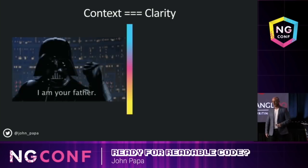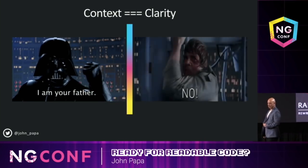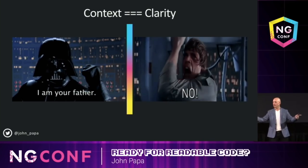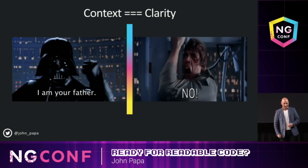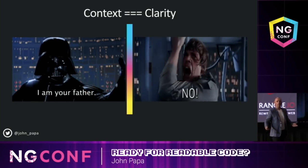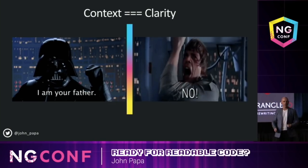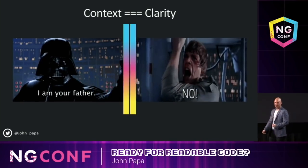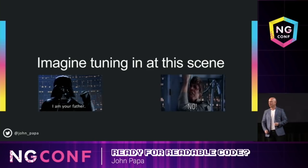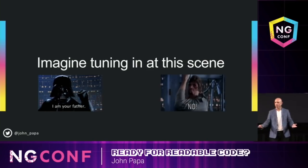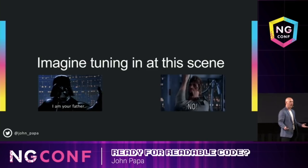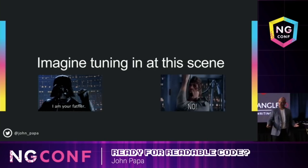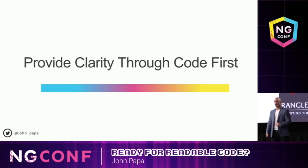Context is clarity. For example, if you saw this movie, you know this was a key moment — the moment where he reveals that he is Luke's father. Spoiler! Now imagine the first time you saw this movie and you tuned in at this scene — you'd be like, who cares? There's some weird guy in a big black helmet telling me he's his dad. And the guy's crying about it. In code, context is kind of important. So providing clarity through code first.